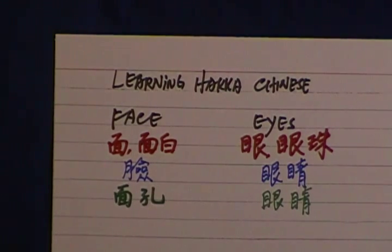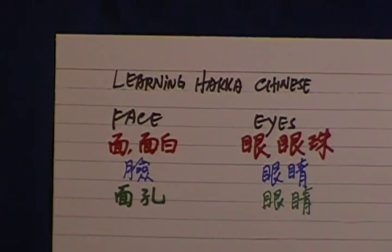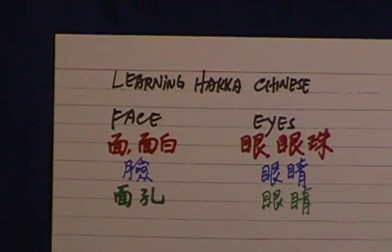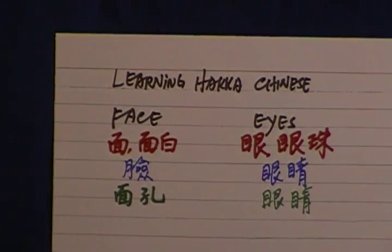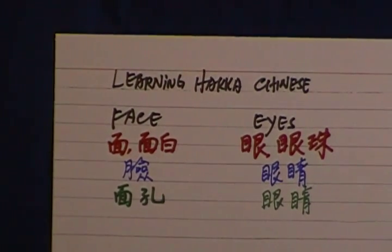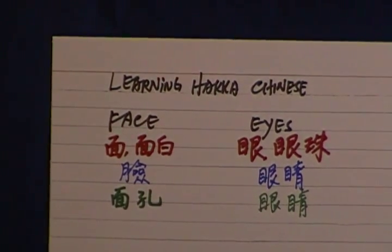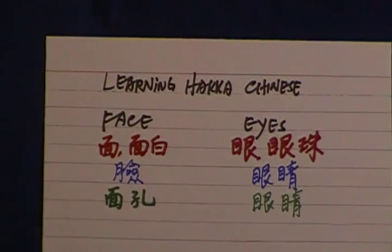Eyes. In Hakka Chinese is nan or nan zu. Nan or nan zu. In Mandarin is yan jing. And in Shanghai dialect is nye jing.